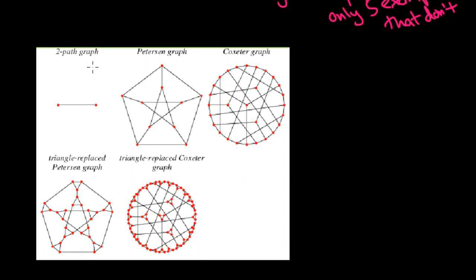And they are the two paths, so the path on two vertices. The Peterson graph. See, I told you the Peterson graph was going to come up as counter examples to things. The Coxeter graph is another example. And these next two are actually just similar to the Peterson graph and similar to the Coxeter graph. But if you look carefully, every vertex of the Peterson graph is now replaced by a triangle. And every vertex of the Coxeter graph is now replaced by a triangle.